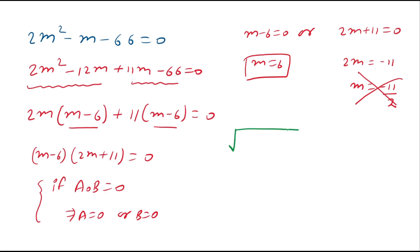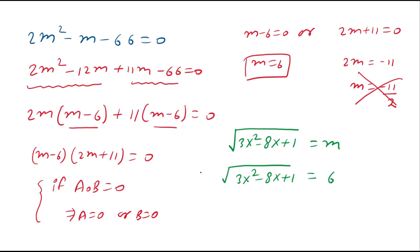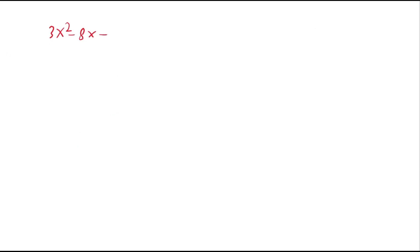Recall that square root of 3x squared minus 8x plus 1 equals m, and m is replaced by 6. Squaring both sides: 3x squared minus 8x plus 1 equals 36. Bringing all expressions to one side: 3x squared minus 8x plus 1 minus 36 equals 0, which gives 3x squared minus 8x minus 35 equals 0.